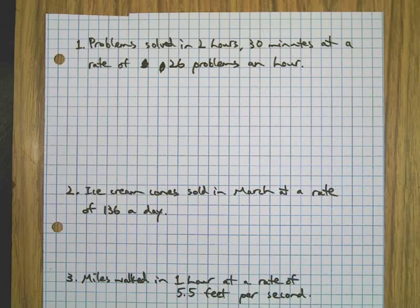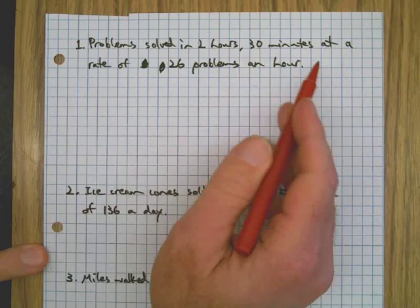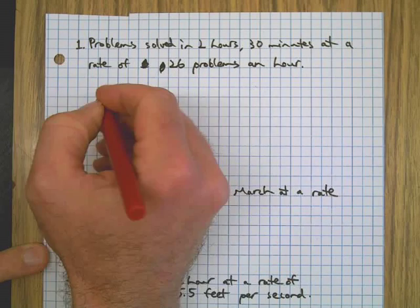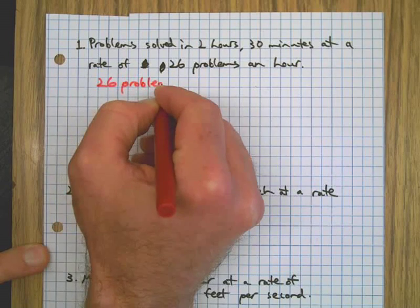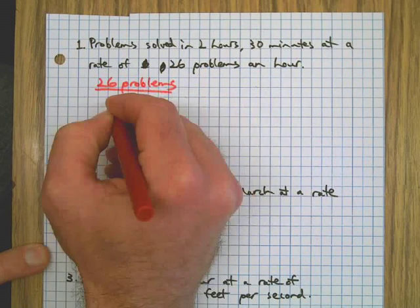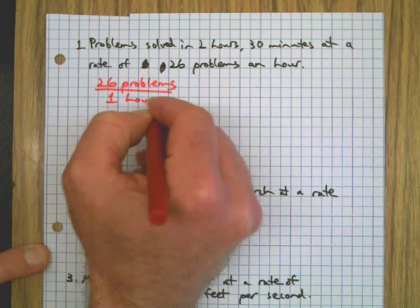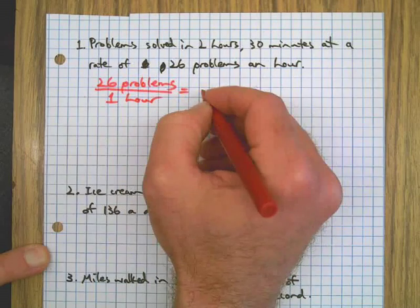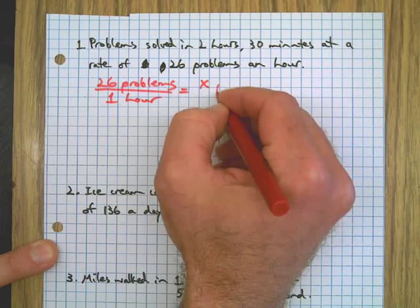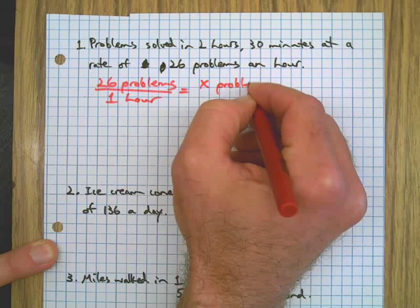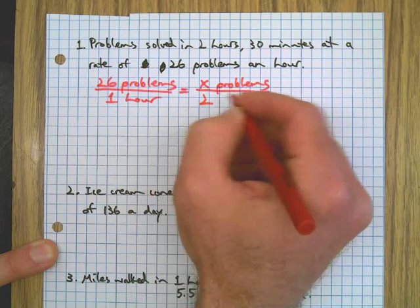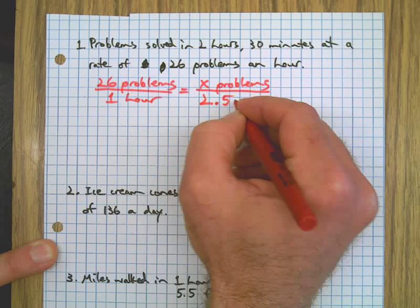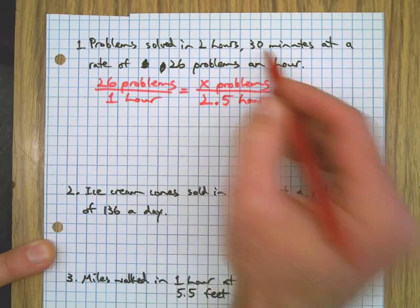We want to find out how many problems were solved in two hours and 30 minutes when we're practicing at a rate of 26 problems per hour. So 26 problems in one hour is going to equal how many problems? I'll use X for the unknown. How many problems in two and a half hours? That's what two hours, 30 minutes is.